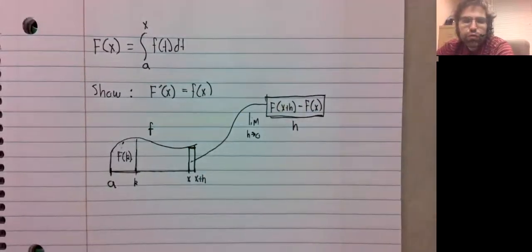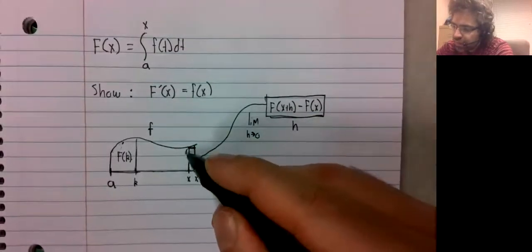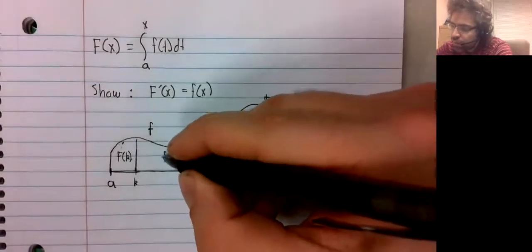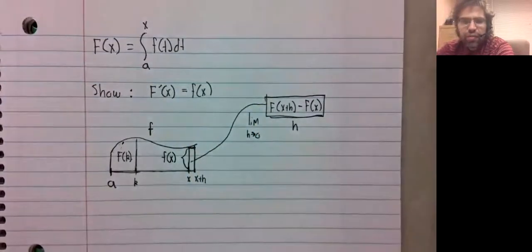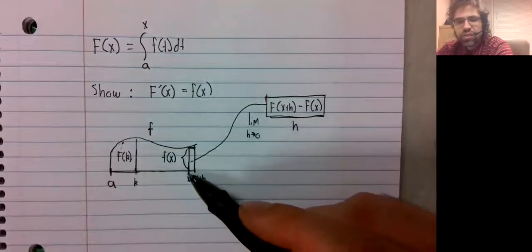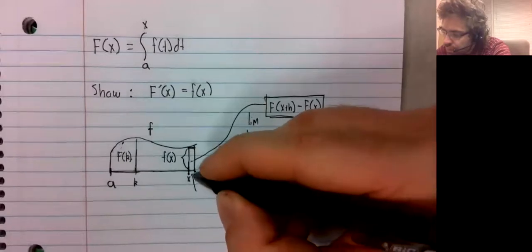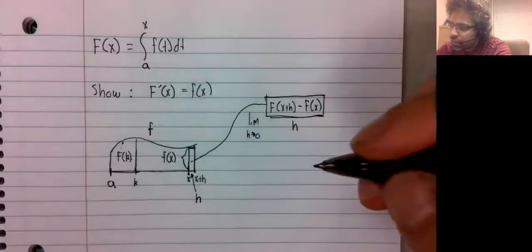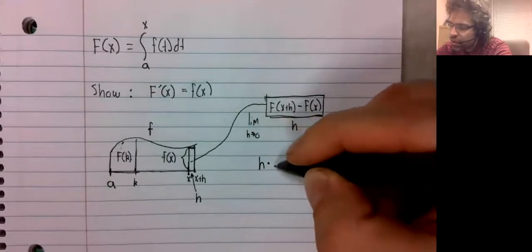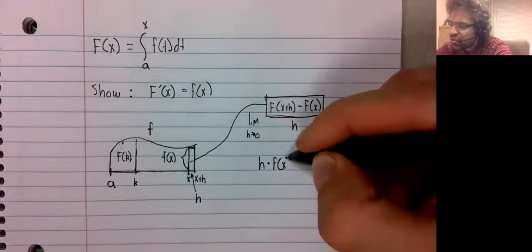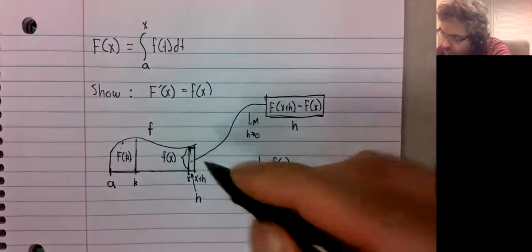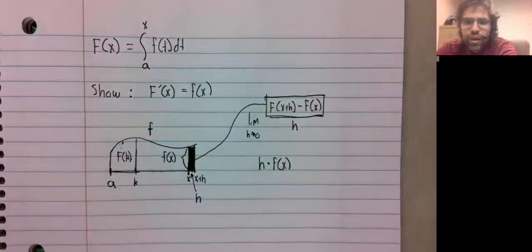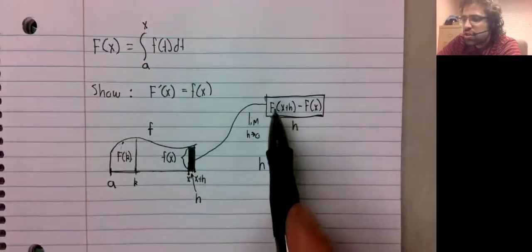Let's create a rectangle. Its height is f of x. If this is x and this is x plus h, its width is h. So h times f of x is the area of this rectangle, which is really close to this.